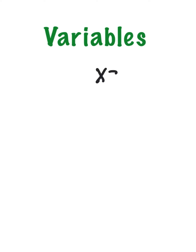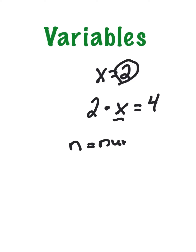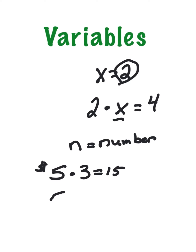If x equals two and I said two times x equals four — well, that's obvious. Sometimes x can stand for more than one thing. A common situation: n equals a certain number. If it costs five dollars for a ticket to a hockey game and I wanted to buy three tickets, I'd just take five times three, which equals 15. But sometimes I don't know how many tickets I'll want to buy, so I'd say five times n and find out the cost later.